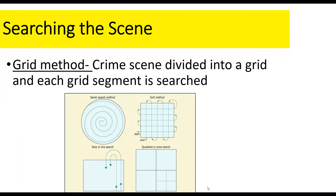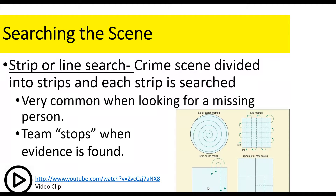The grid method is a search pattern where investigators make a grid to cover the maximum amount of area. You can see that in the picture. One investigator or multiple investigators can do this, making a grid pattern. For example, if a crime scene has a tile floor — like a classroom with square tiles — it's already a grid pattern, so investigators would likely choose the grid method in that case.